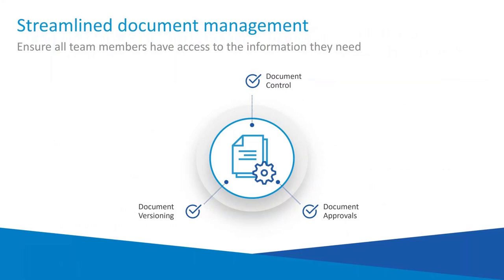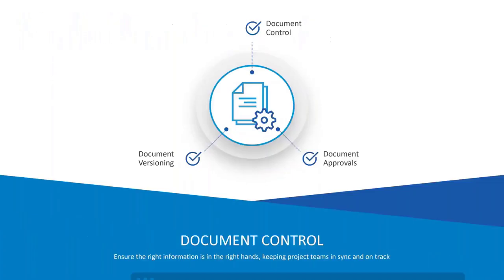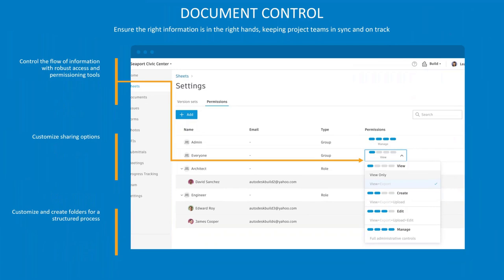With the BIM 360 or just the Docs environment, it's about document control, document versioning — making sure everyone has the latest version — and document approvals as well as a review process you can build into the system. The key part is document control: you can control how people access things based on a role, a username, or the company someone works for. There's a lot of granularity in the way you can control documents, and everyone based on their job function will have a very tailored experience when they come into the system.